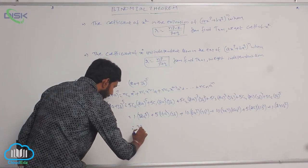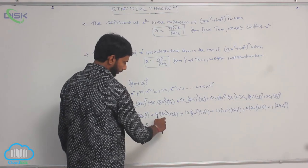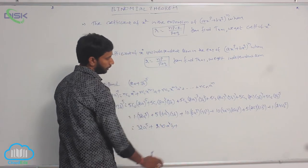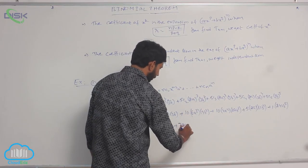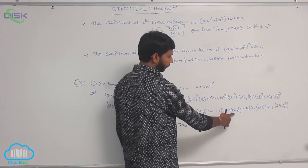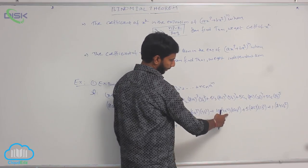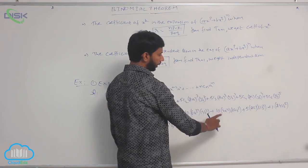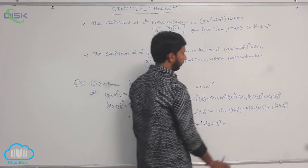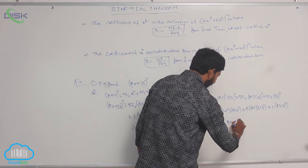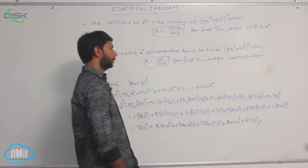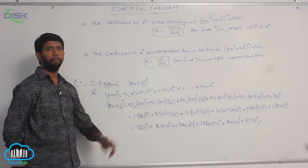This equals 32a power 5, plus 240a power 4 b, plus 720a cubed b squared, plus 1080a squared b cubed, plus 810ab power 4, plus 243b power 5. This is the expansion of (2a plus 3b) whole power 5.